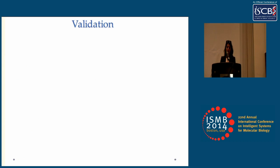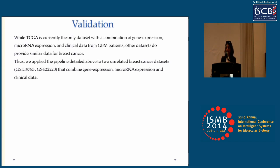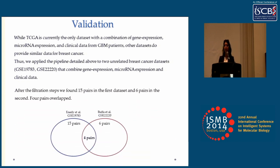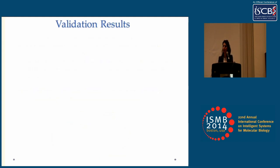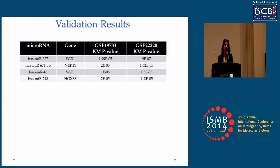Robustness is a highly important feature in computational analysis, and results are stronger when supported by additional datasets. While TCGA is the only dataset containing gene expression, clinical data, and microRNA expression for GBM patients, other datasets provide similar data for breast cancer. We used two datasets from the Gene Expression Omnibus containing this combined data. After applying the filtration pipeline, we ended up with 15 pairs from the first dataset and 6 from the second, with 4 pairs overlapping between both datasets.